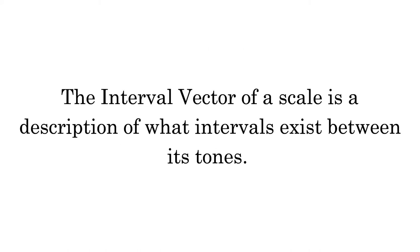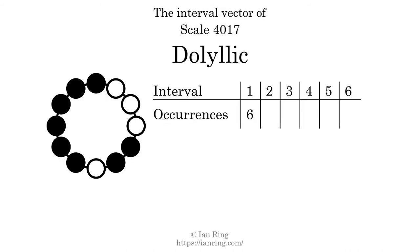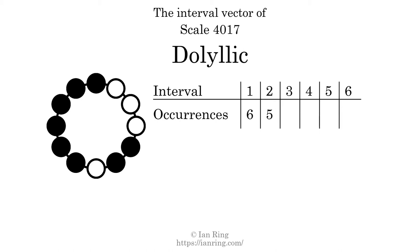The interval vector of a scale is a description of what intervals exist between its tones. There are 6 intervals with the size of 1 semitone. There are 5 intervals with the size of 2 semitones.